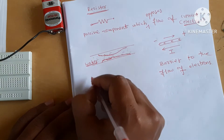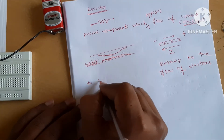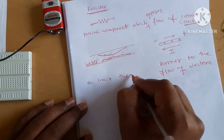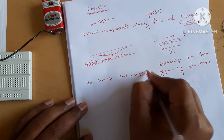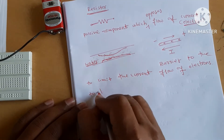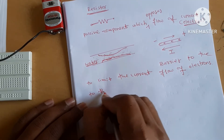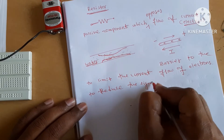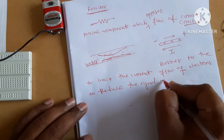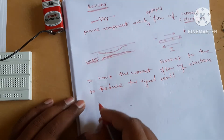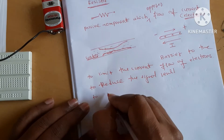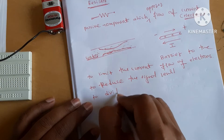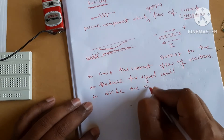Where do we use resistors? To limit the current, to reduce the signal level, and to divide the voltage.